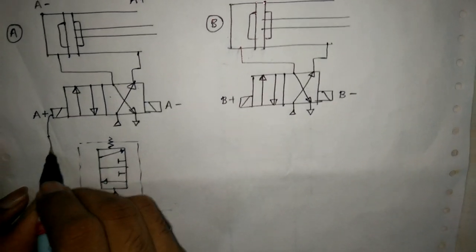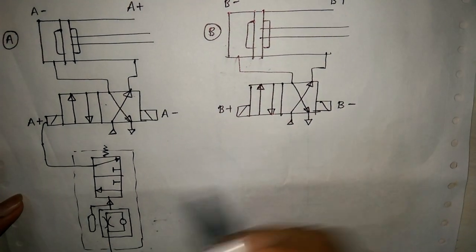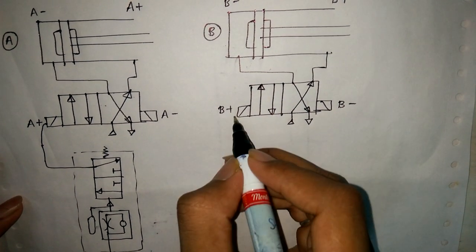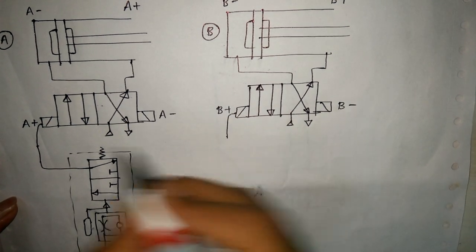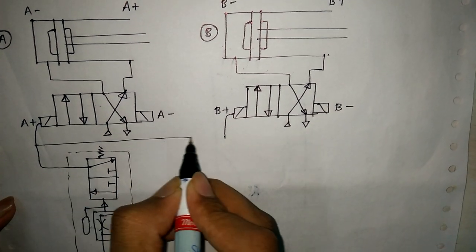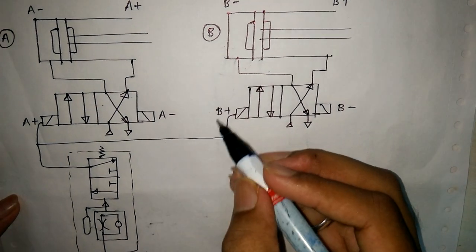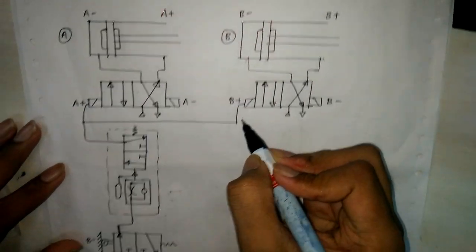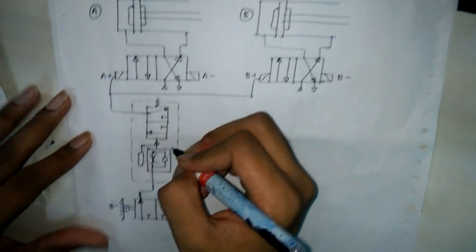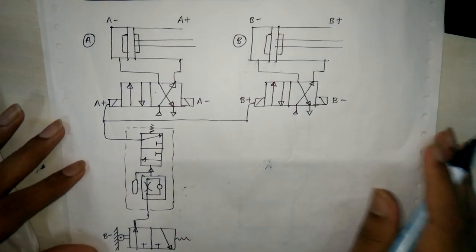Connecting with AB+: the connection will be like this. A+ and B+ are connected to the delay, and then B-.